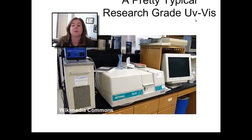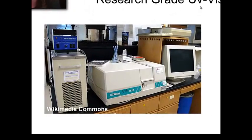So here's a pretty typical research grade UV-Vis. They're found all over the place, and most research labs have them. They're not that big. They have a computer attached. In this case, there's a flow system, a flow cell setup, so they're doing a kinetic measurement versus time. But as you can see, it's a pretty straightforward instrument.